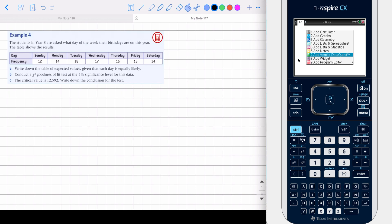Students in Year 8 are asked what day of the week their birthdays are on this year. The table shows the results: Sunday, Monday, Tuesday. So there's 12 students had their birthday on a Sunday, 14 had it on a Monday, 18 on a Tuesday, etc. Write down the table of expected values.